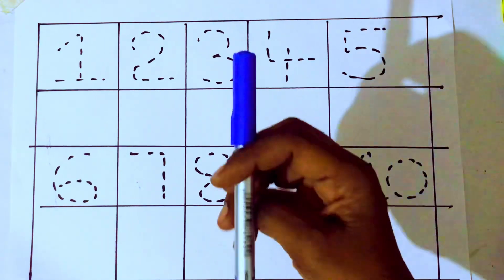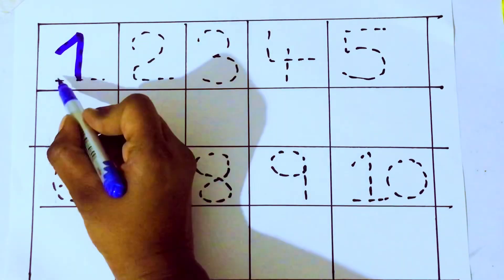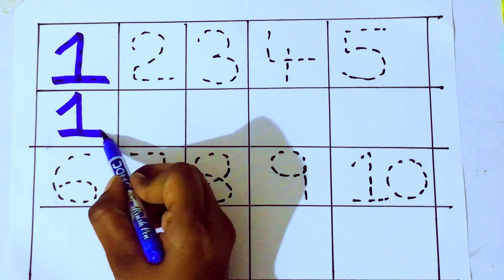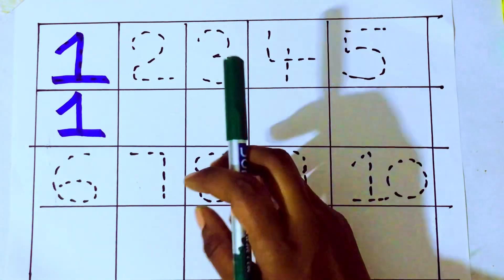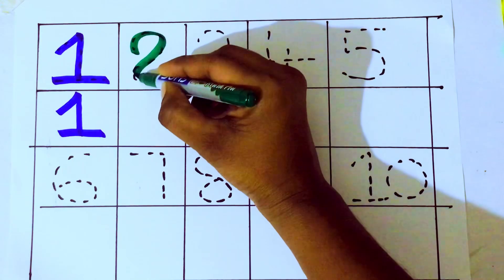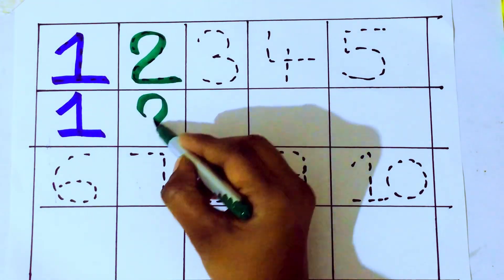Blue color. Number 1. 1. After which number kids? 2. Green color. Which number kids? 2. T-W-O. 2. Which number kids? 2.